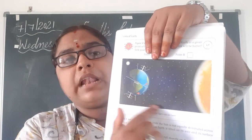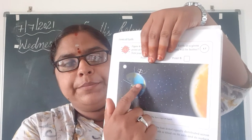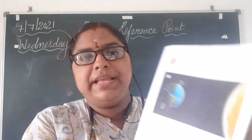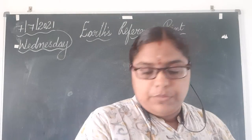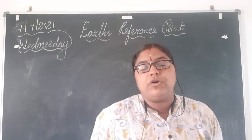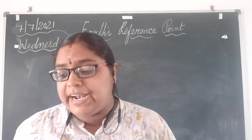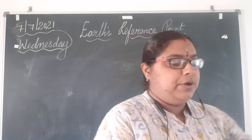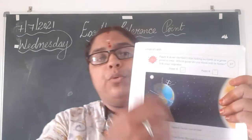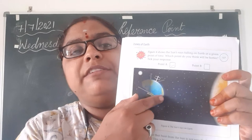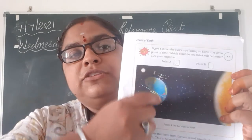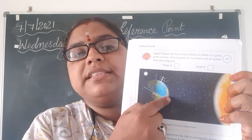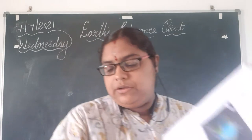Which place experiences the sunlight first — A or B? A. Very good. This is because the earth is tilted on its axis and its surface is curved. Because earth is tilted and curved, the A part will be experiencing the heat first.